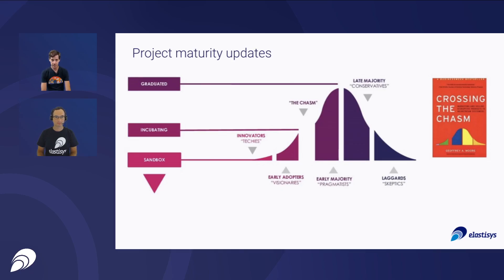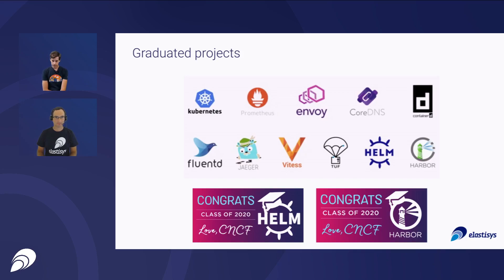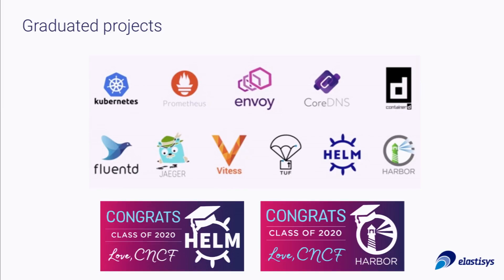Right now we have a set of 11 graduated products. Recent graduates from this year include the Harbor Container Registry, which allows you to run your own private container registry, apply vulnerability scanning, and add policies for what container images you're allowed to deploy, as opposed to just downloading images from public Docker Hub. Another graduate from this year is Helm, the Kubernetes Package Manager. The first projects graduated with Kubernetes back in 2018, including Prometheus and Envoy, with the rest graduating last year. Even so, many of these technologies are rather novel.